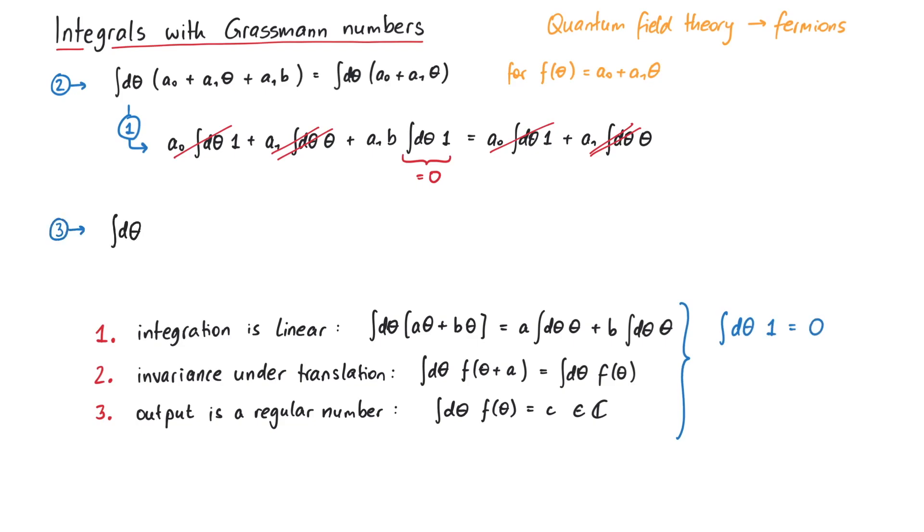The third condition states that the output of an integral is a regular number. If we start with the general function f, we can already say that the first term will be 0, since the integral over 1 is 0.